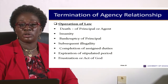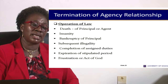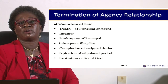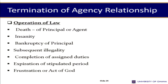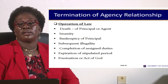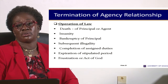The second way is by operation of law — not as a result of any act of the parties, but because the law says so. An example is where the principal or the agent dies. This relationship is between one person and another, so if one person is no longer there, the other cannot claim to be acting on behalf of another. Once either party or both die, the relationship comes to an end. Similarly, if either party is declared insane, the relationship automatically comes to an end.